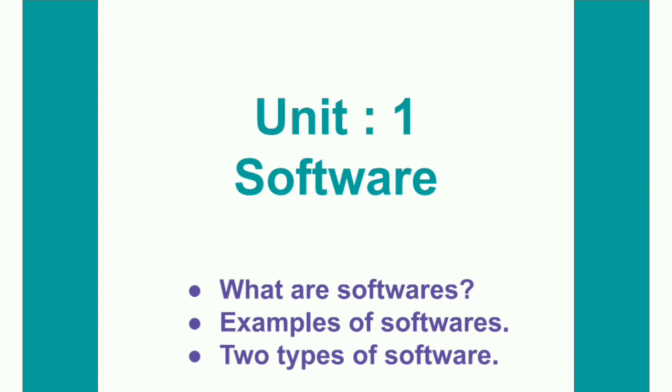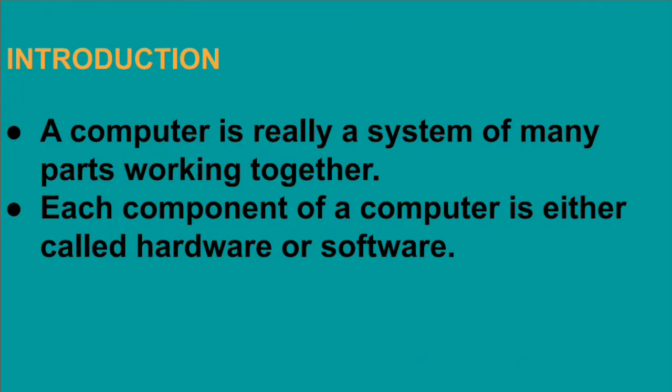A computer is really a system of many parts working together. As you know, it has four basic parts: keyboard, mouse, CPU, and monitor. All these devices work together to form a computer system. Each component of a computer is either called hardware or software.